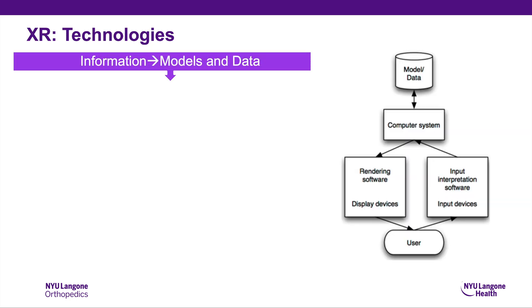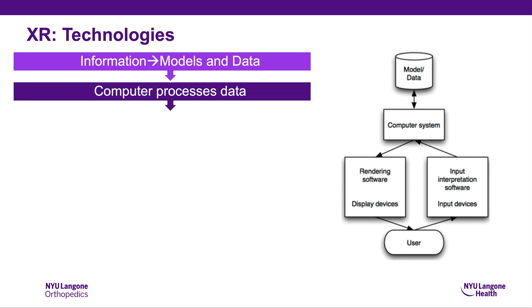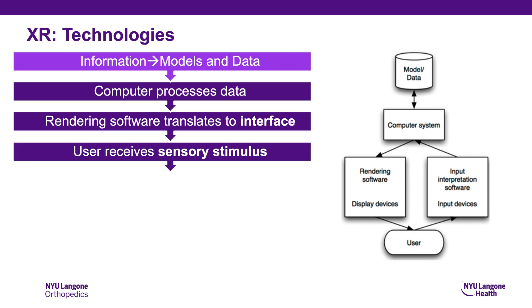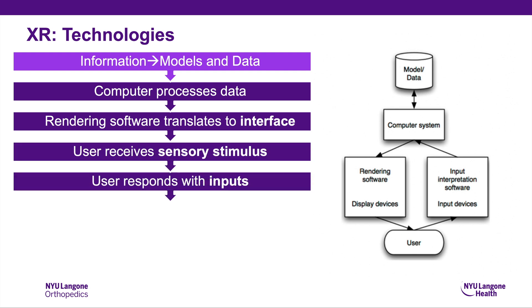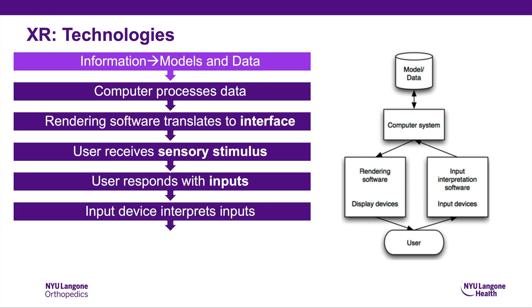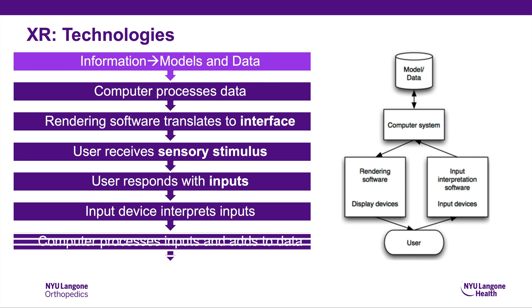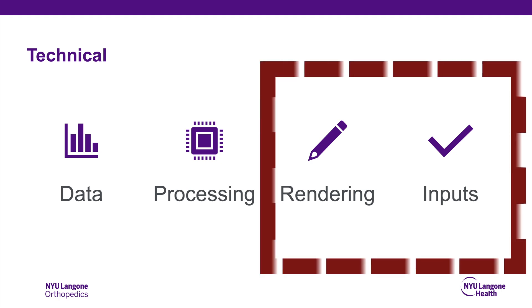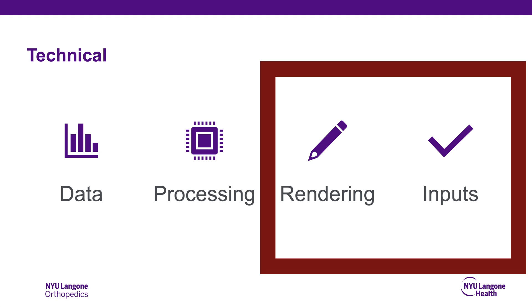What are XR technologies made up of? You have information, you have a computer that processes the data, you have rendering software that translates the data into some interface with a user. Then the user receives that stimulus, the user responds with some input, and then the input device interprets what the user does. The computer processes it, adds it to its data, and then the cycle starts all over again.